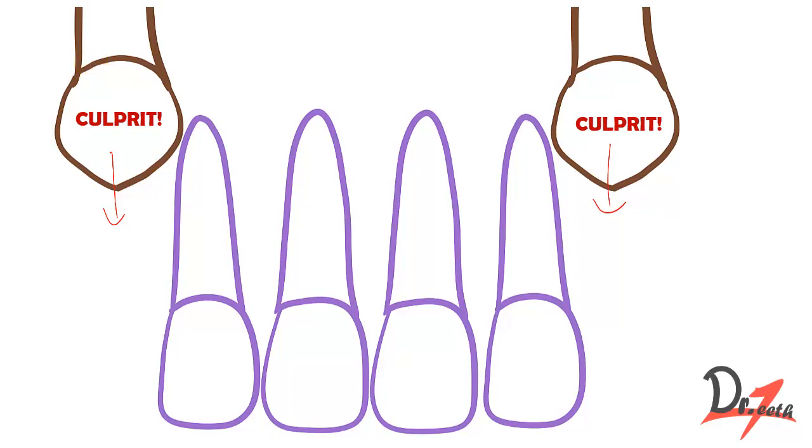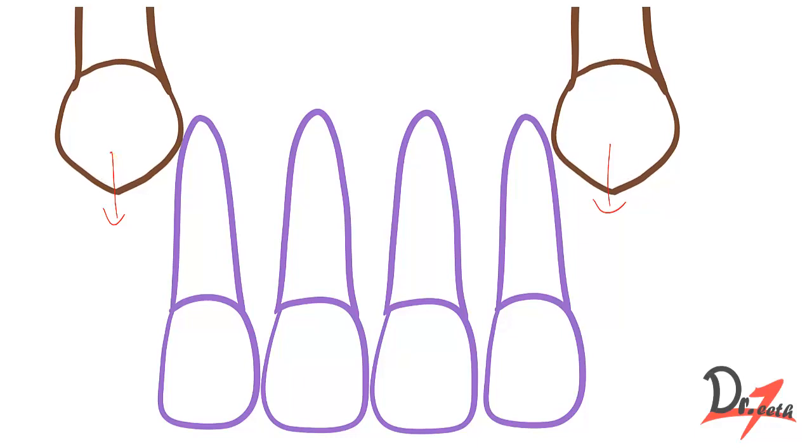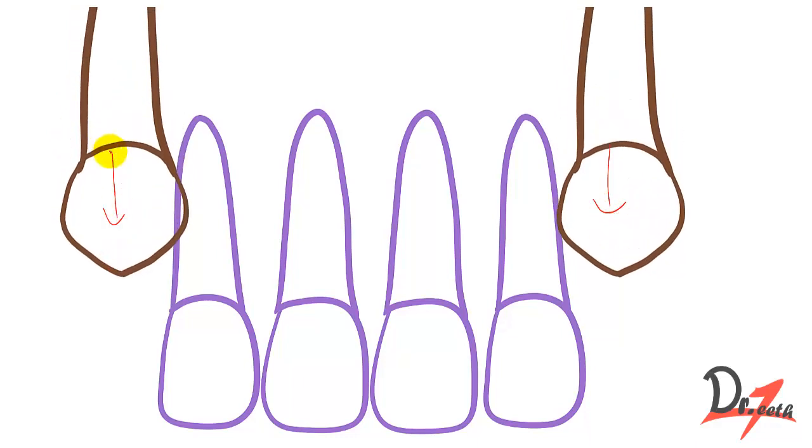This canine will erupt around the age of eight years. When it starts erupting, this canine will apply pressure on the roots of the lateral incisor. Here we can see that it is applying pressure on the roots of the lateral incisor.